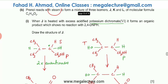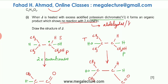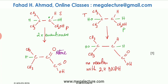Going back to the question: J, when oxidized, forms a product that shows no reaction with 2,4-DNPH. 2,4-DNPH is used to identify aldehydes or ketones. The first oxidation product is a carboxylic acid — so no reaction with 2,4-DNPH.